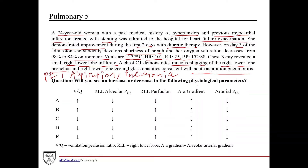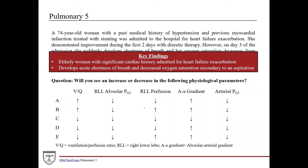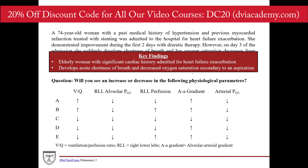The question asks whether you will see an increase or decrease in the following physiological parameters during airway obstruction: the VQ ratio (ventilation-perfusion ratio), the right lower lobe alveolar PO2 (partial pressure of oxygen), the right lower lobe perfusion, the AA gradient (alveolar-arterial gradient), and the arterial partial pressure of oxygen.